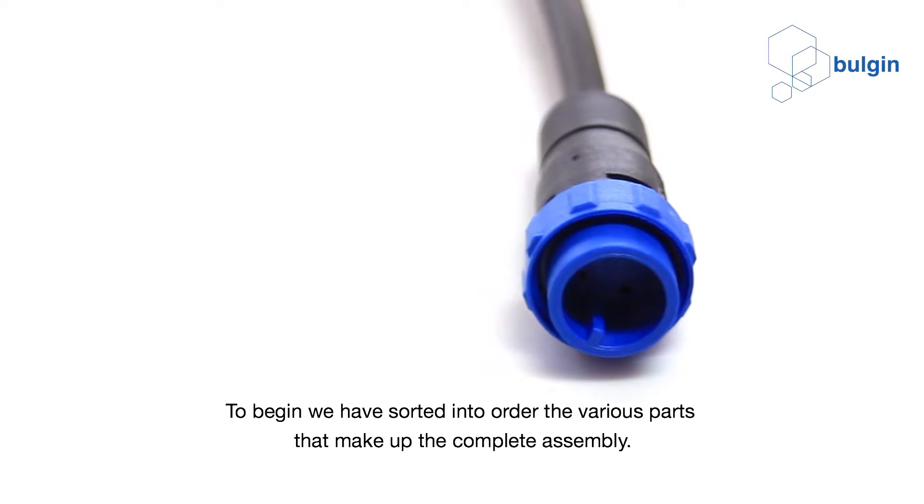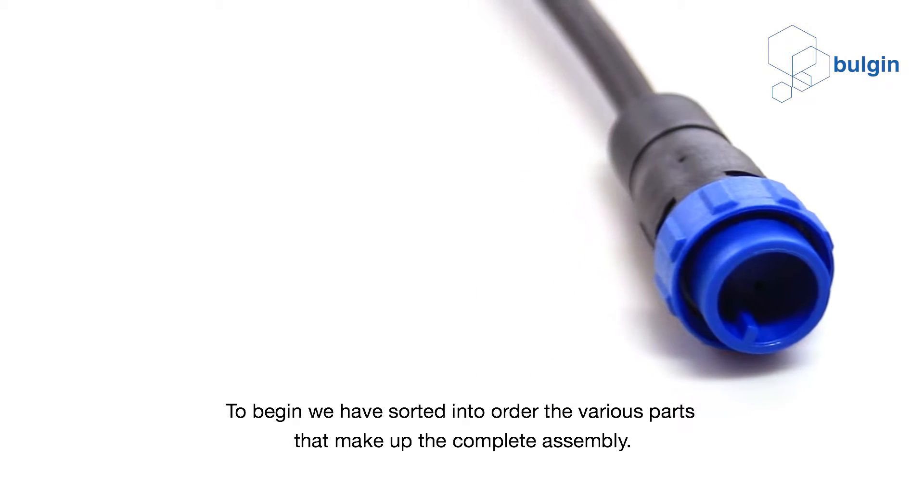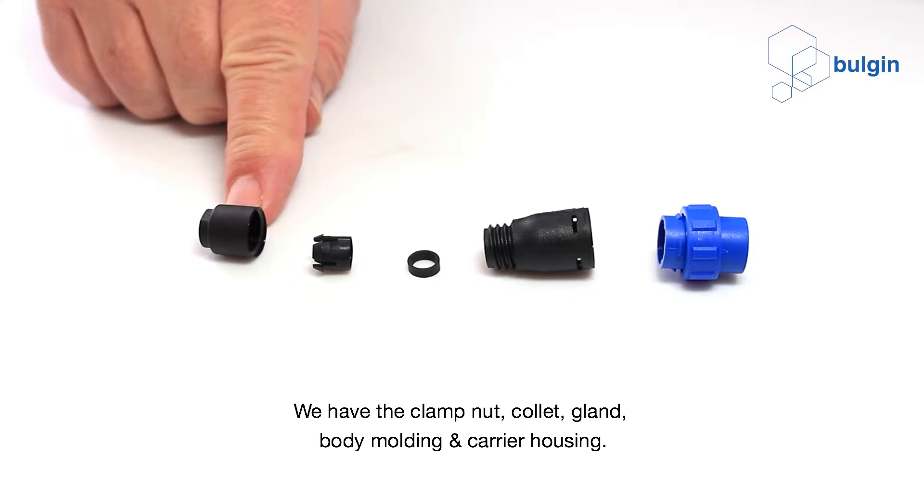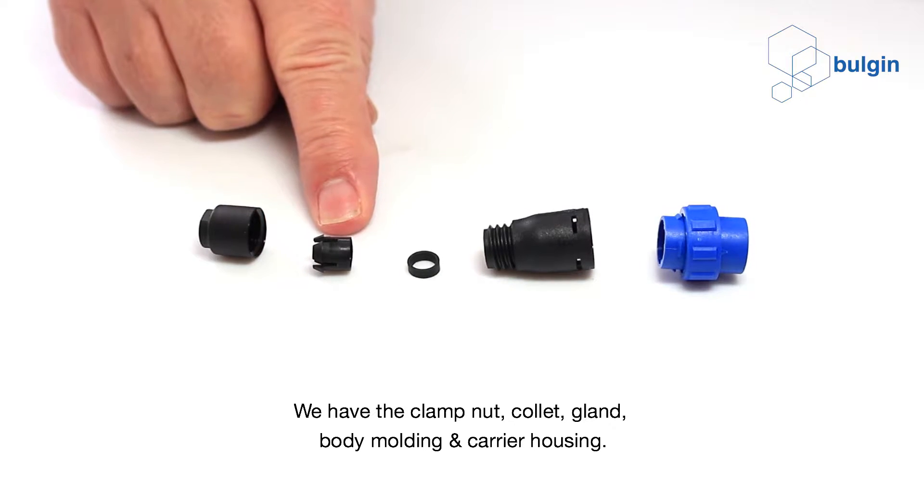To begin, we have sorted into order the various parts that make up the complete assembly. We have the clamp nut, collet, gland, body moulding and carrier housing.